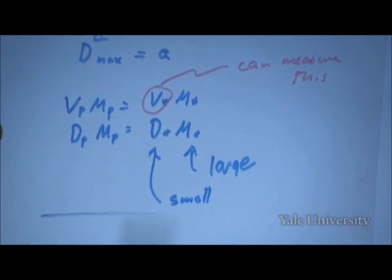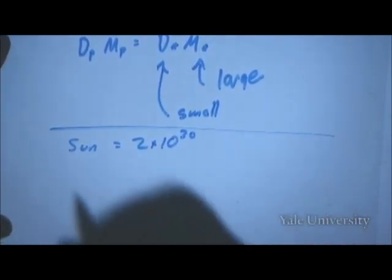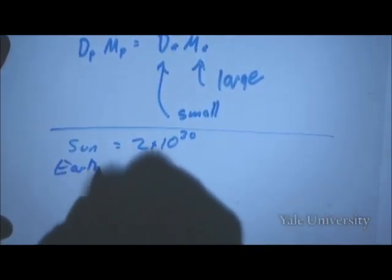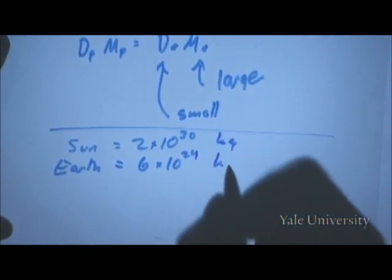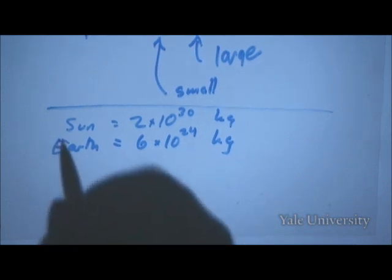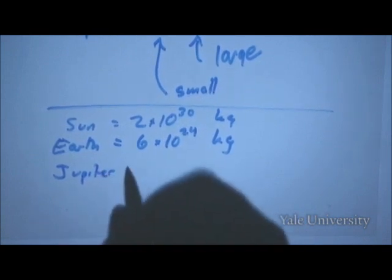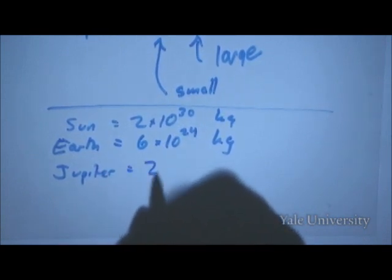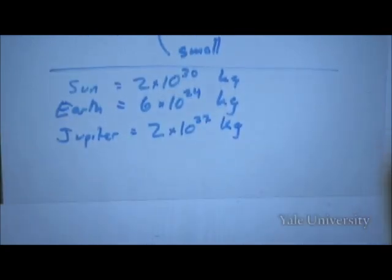Let me give you some masses just to give you a sense of this. The Sun's mass is about two times ten to the thirty kilograms. Just for reference, the Earth's mass is six times ten to the twenty-four kilograms — down by almost a factor of a million. So the Sun moves much slower than the Earth does due to their mutual gravity. Jupiter is the most massive of the planets at about two times ten to the twenty-seven kilograms — a thousand times smaller than the Sun.